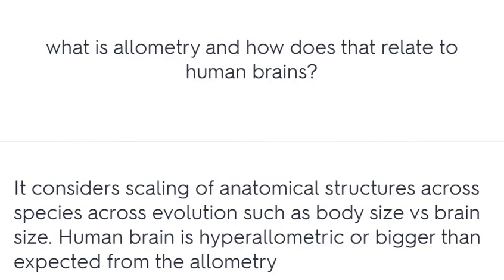What is allometry and how does it relate to human brains? It considers scaling of anatomical structures across species and across evolution, such as body size versus brain size. The human brain is hyper-allometric, or bigger than expected from allometry.